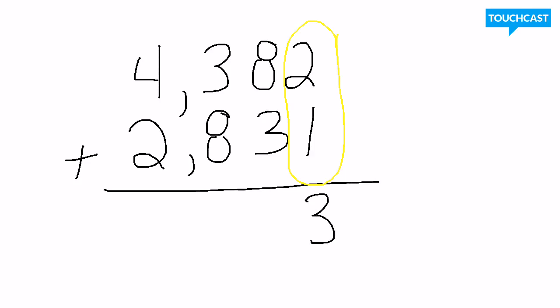Next, we're going to move to our tens place. Remember, our tens place is actually 80 and 30 versus 8 and 3, but let's look at it just from that standpoint. So 8 plus 3 is going to be, if you do your math facts, 11. So we drop down that one, and then we're going to carry or create a new group above the hundreds place, so we add there.